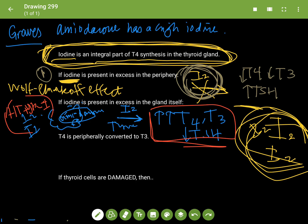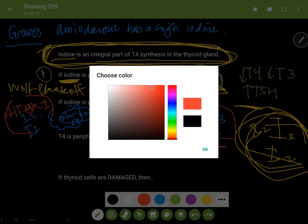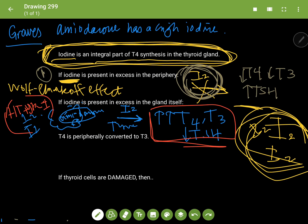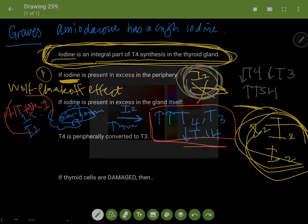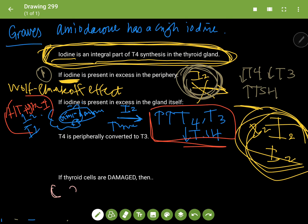Amiodarone-induced thyrotoxicosis type 2 is when the cells are damaged. Again, amiodarone is entering the thyroid, but it's acting in a way that damages the cells of the thyroid. There's this destruction of these cells.